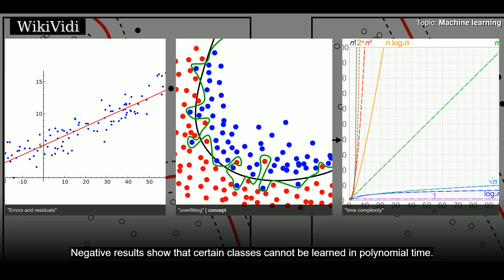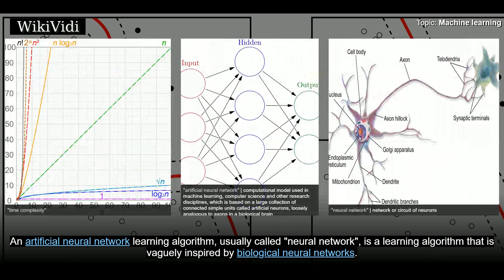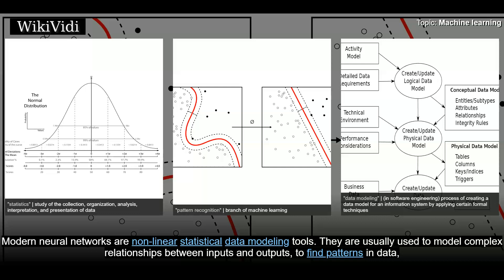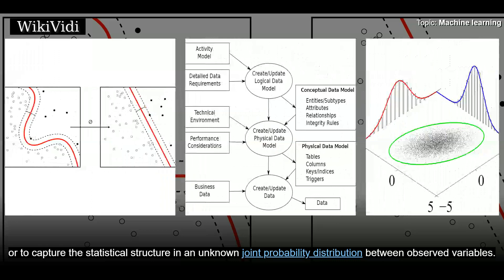Artificial neural networks. An artificial neural network learning algorithm, usually called neural network, is a learning algorithm that is vaguely inspired by biological neural networks. Computations are structured in terms of an interconnected group of artificial neurons, processing information using a connectionist approach to computation. Modern neural networks are non-linear statistical data modeling tools. They are usually used to model complex relationships between inputs and outputs, to find patterns in data, or to capture the statistical structure in an unknown joint probability distribution between observed variables.